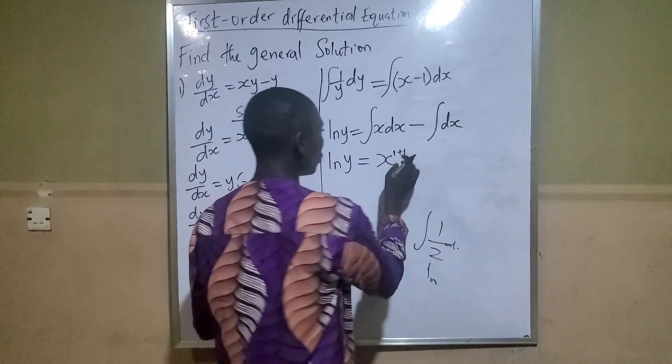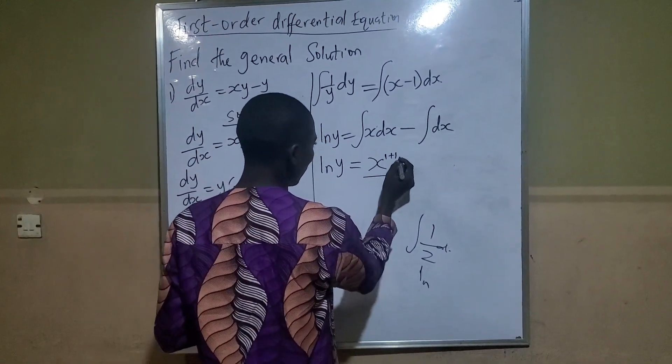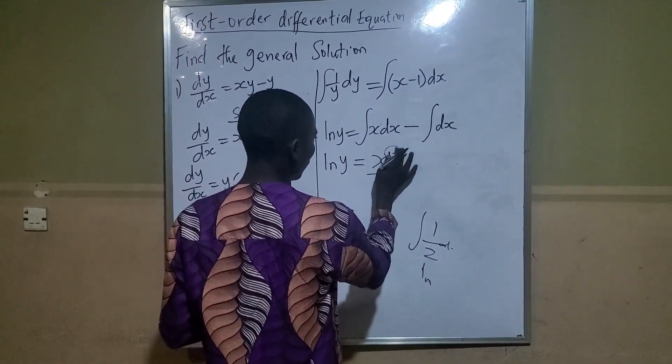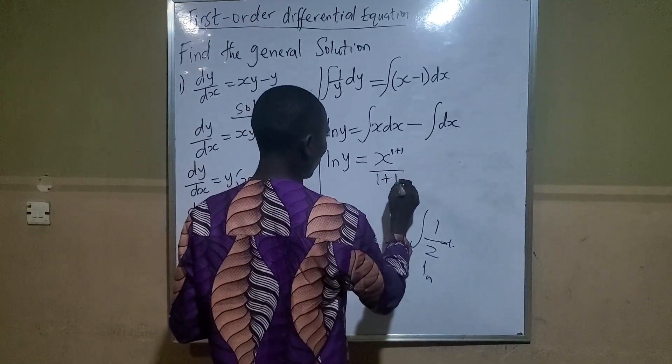So when I add 1, I will divide by everything here, which is 1 plus 1, giving me 2.